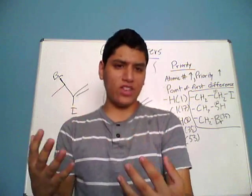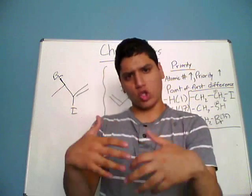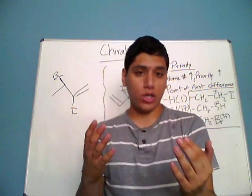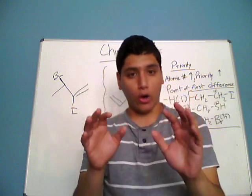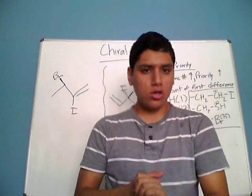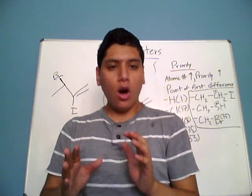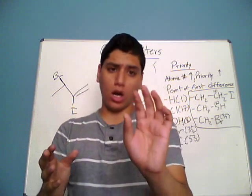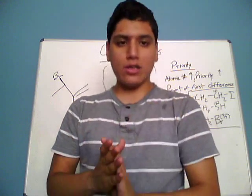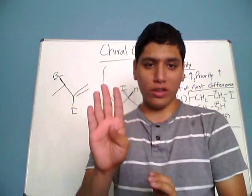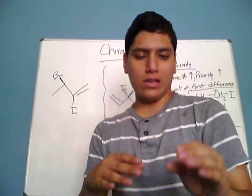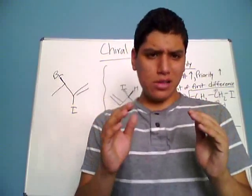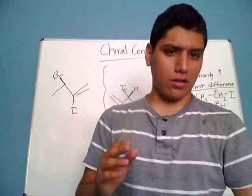In this video, I'm going to be giving a brief introduction to chiral centers, and then I'm also going to be explaining something called the priority rules. So what are chiral centers? A chiral center is basically an atom, normally a carbon atom, that's bonded to four different things — in other words, it's an atom that has four substituents.